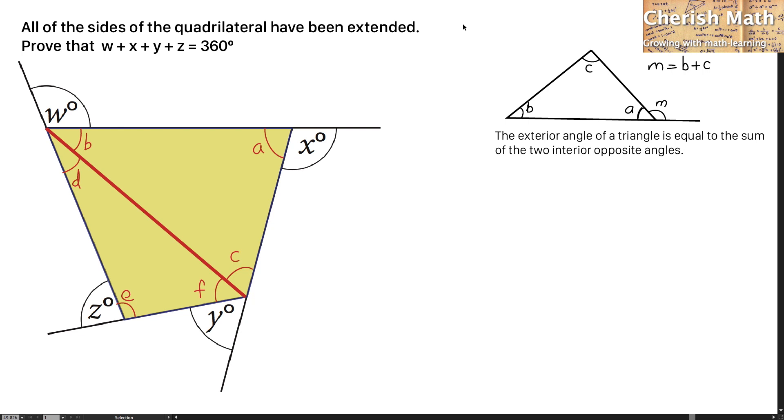I will use the rule located on the top right-hand side to solve the problem. This rule is: the exterior angle of a triangle is equal to the sum of the two interior opposite angles.